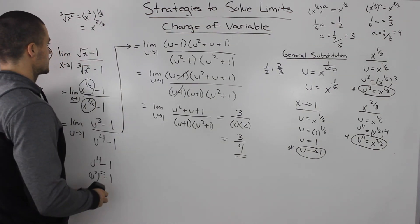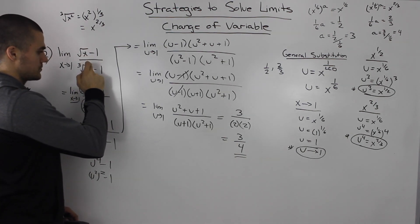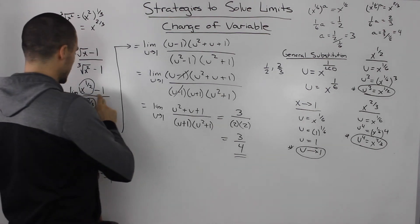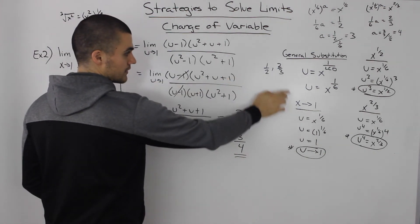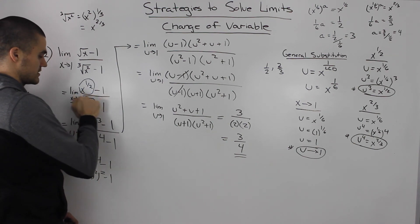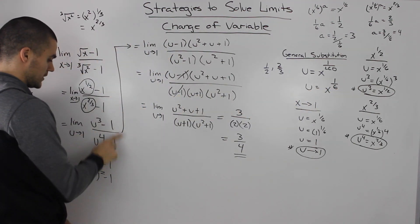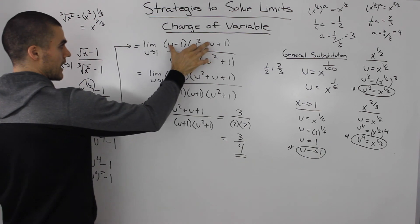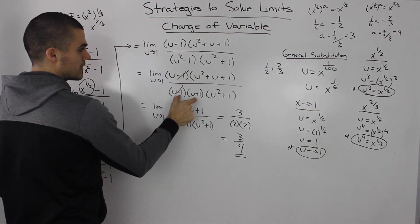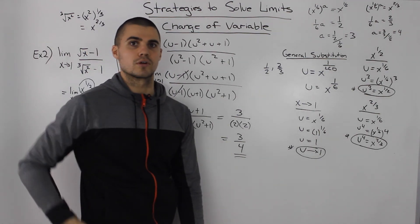Let's do a recap. We had this limit with x's in radical terms, switched it to exponential form, made a general substitution u = x^(1/6), made expressions equivalent to all the x values, substituted them into the limit to get a new limit in terms of u, did factoring using difference of cubes then difference of squares twice, the (u minus 1) factors cancelled out, then we substituted 1 for u and ended up with 3 over 4.